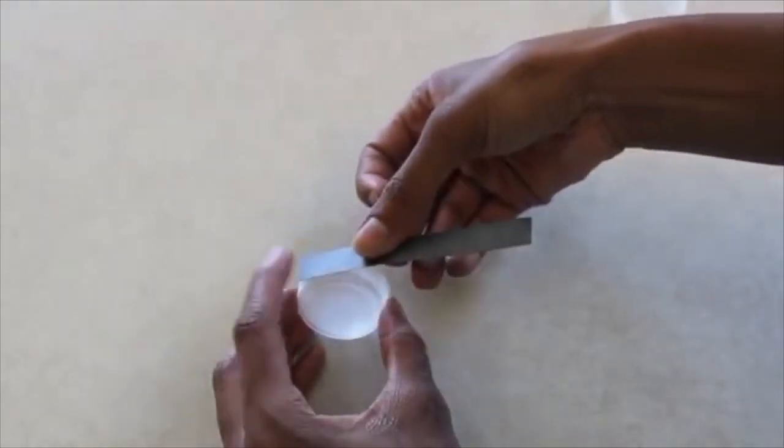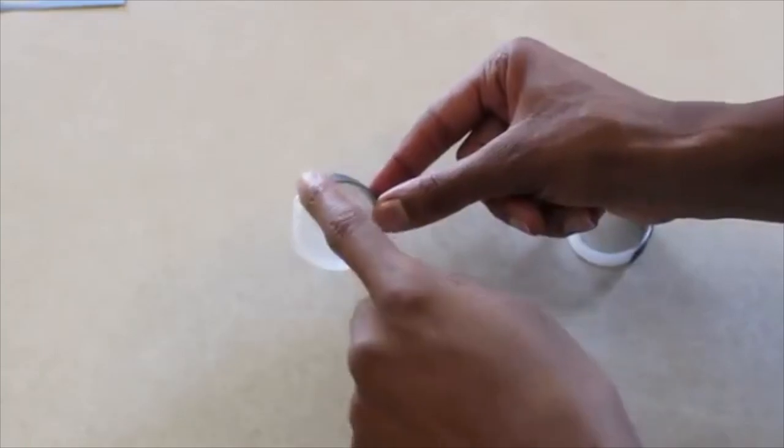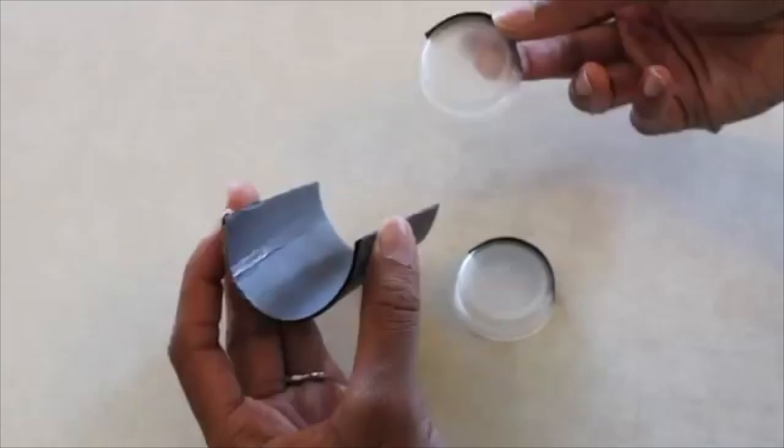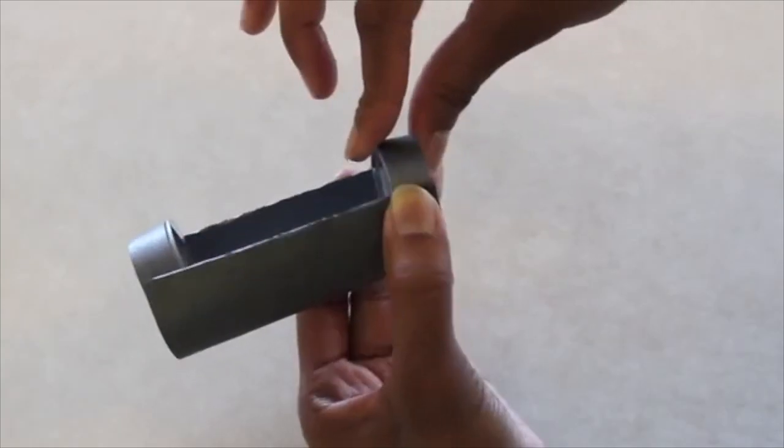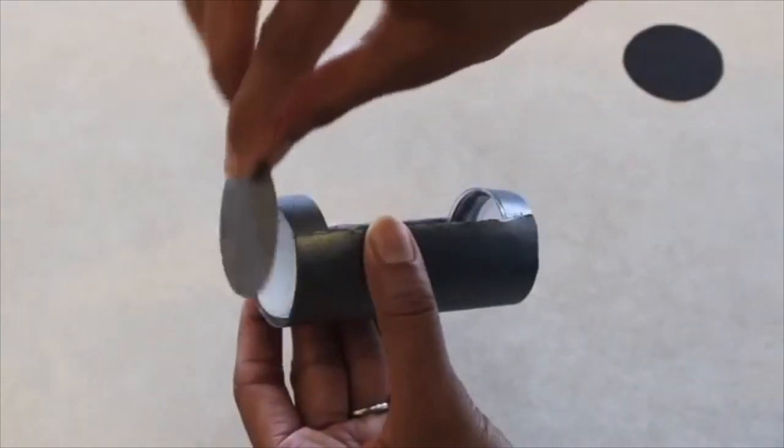Glue a strip of scrapbook paper on the edge of your bottle cap, but there is no need to do the paper all the way around because I'm going to glue the exposed edge into the roll. Repeat on the other side. Glue the circles to the sides.